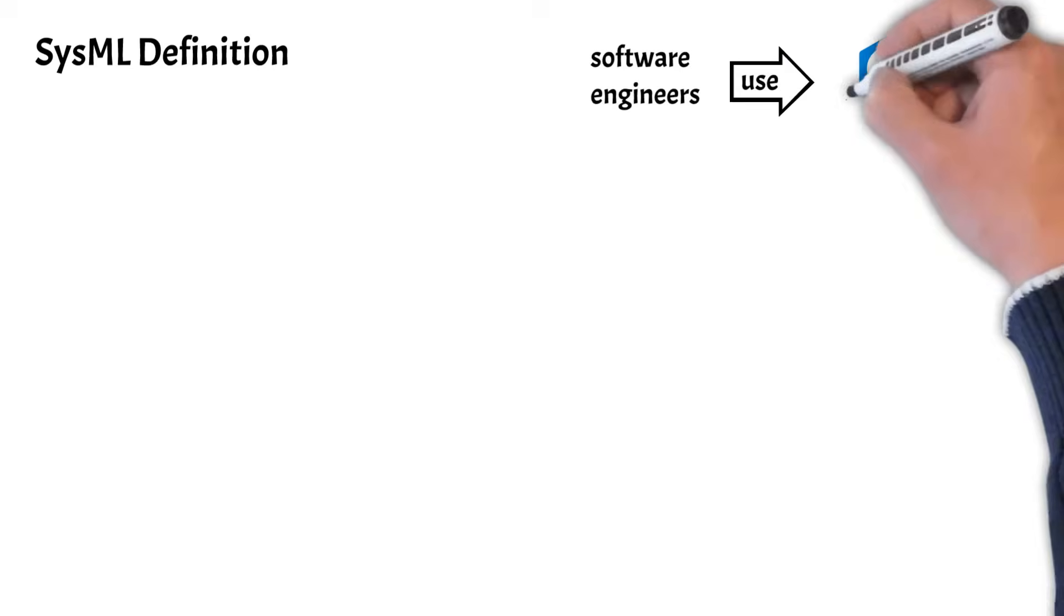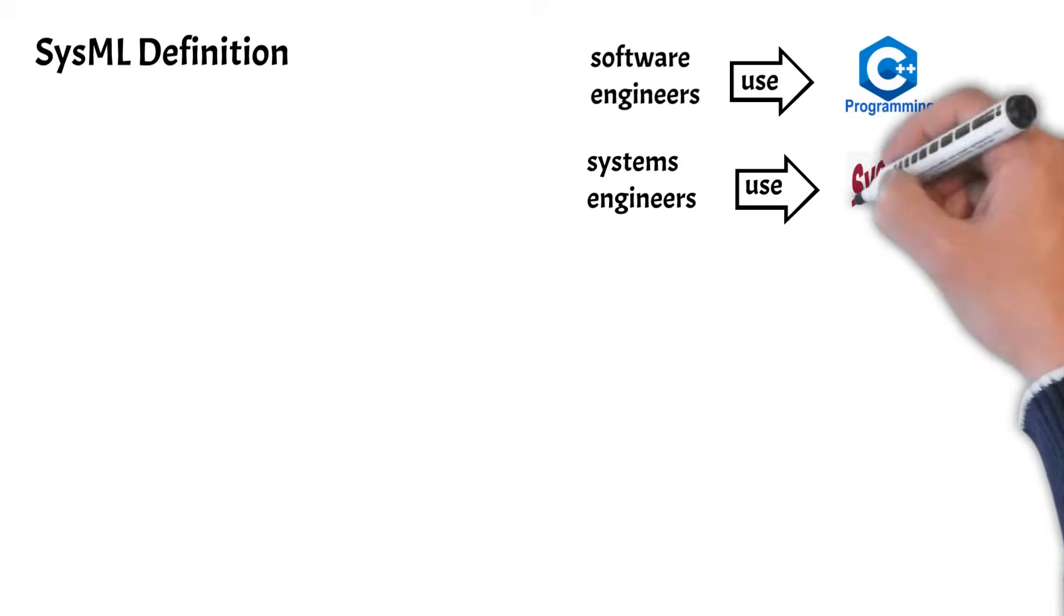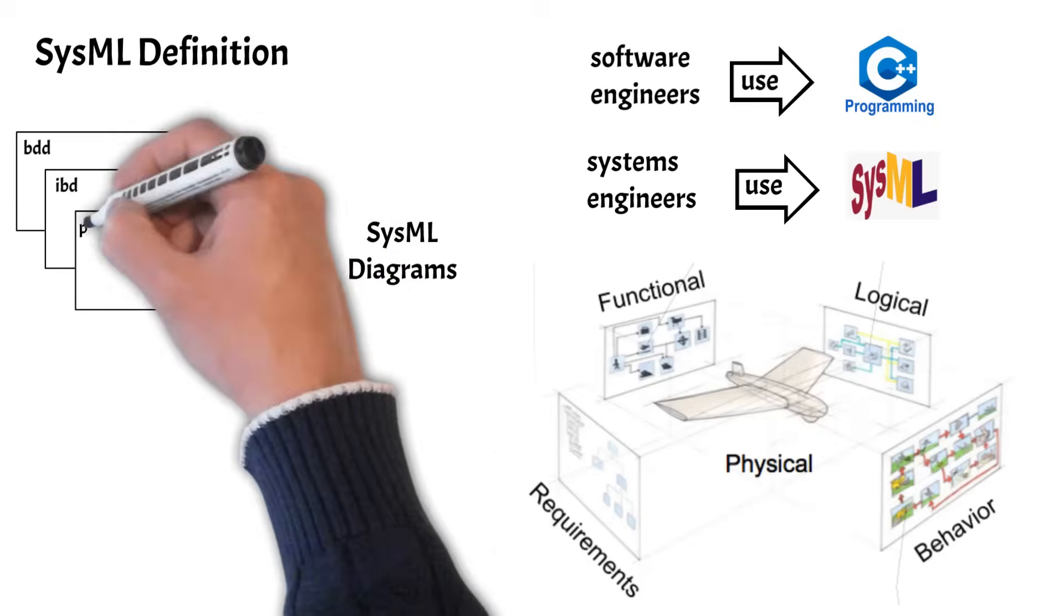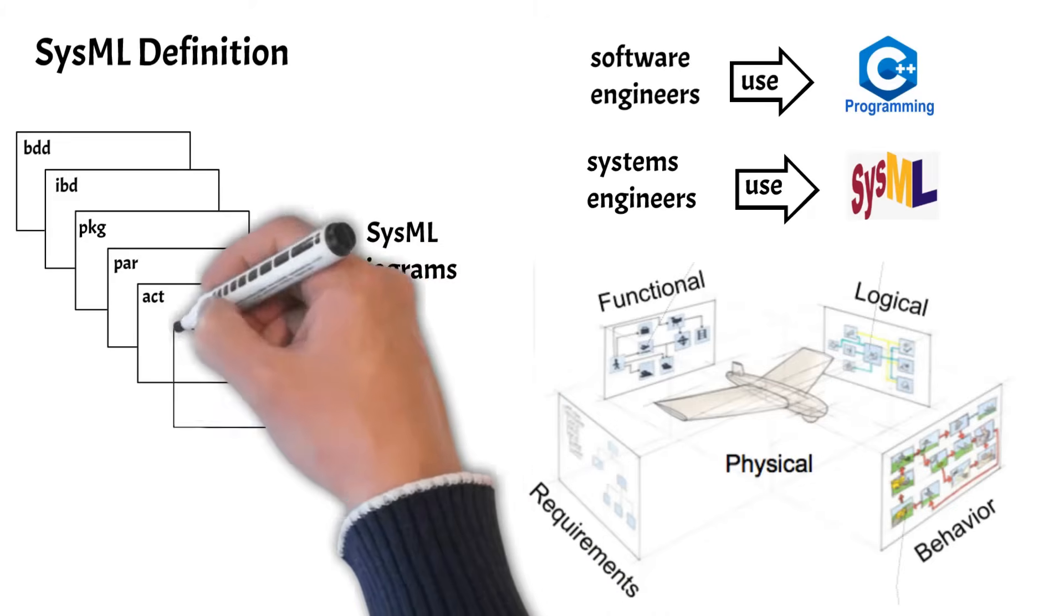SysML is a graphical language used by model-based systems engineers that utilizes diagrams and tables in order to express system information. It provides a standard set of 9 diagram types which can be used to organize and express system information.